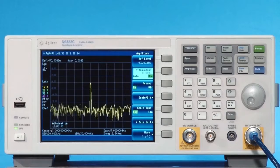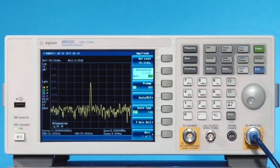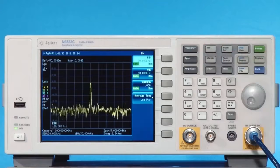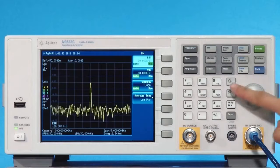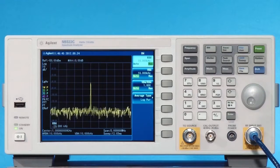Decreasing the RBW by a decade reduces the noise floor by 10 dB. Press BW, toggle the RBW setting to Manual. Decrease the resolution bandwidth using the arrow key.